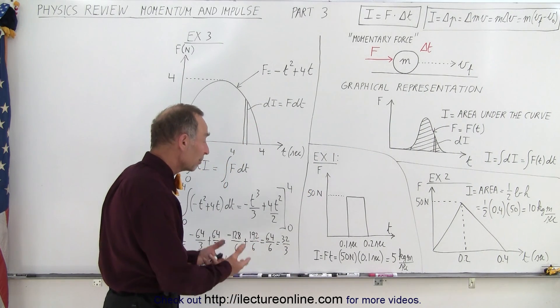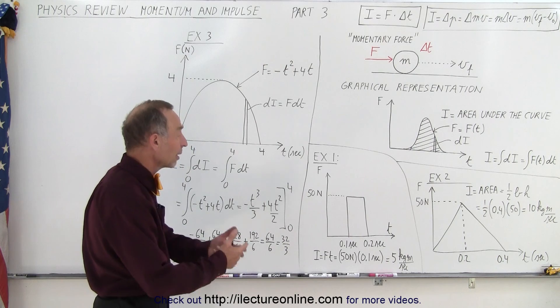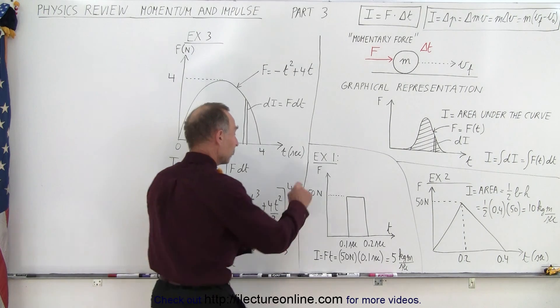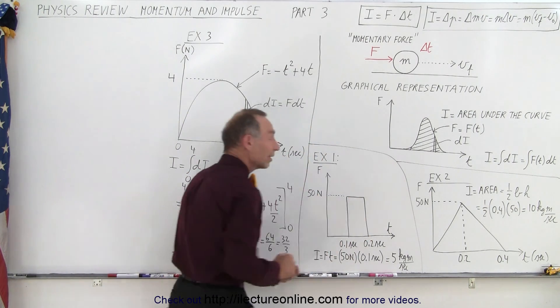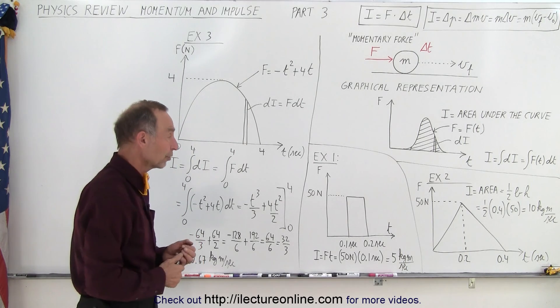So that would be the impulse. The impulse would simply be 5 kilogram meters per second, which is a 50 Newton force acting over one tenth of a second. Sometimes that's called the average force.